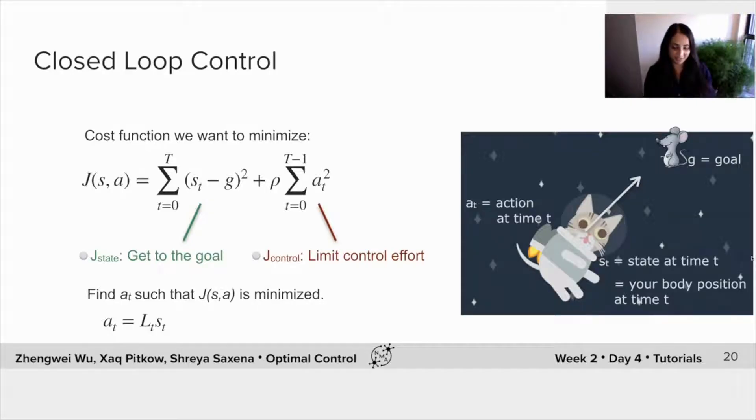So we have two components to our cost function. One of them is to get to the goal and stay there. And the other one relates to limiting the control effort a of t. So in general, we want to minimize this cost function. And this variable rho dictates how much we care about limiting the control effort, as opposed to not being at the goal.